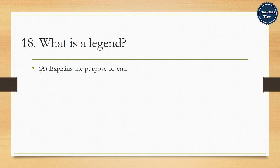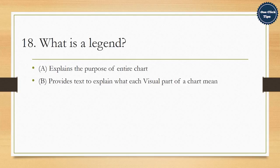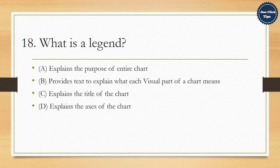18. What is a legend? A. Explains the purpose of entire chart, B. Provides text to explain what each visual part of a chart means, C. Explains the title of the chart, D. Explains the axis of the chart. The correct answer is B. Provides text to explain what each visual part of a chart means.